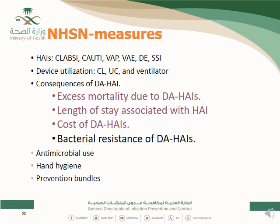The measures you can find in NHSN publications include HAI events — CLABSI, CAUTI, VAP, VAE, dialysis, and SSI — as well as device utilization, especially central line, urinary catheter, and ventilator. Consequences of HAI, including bacterial resistance and antimicrobial use, are also reported.